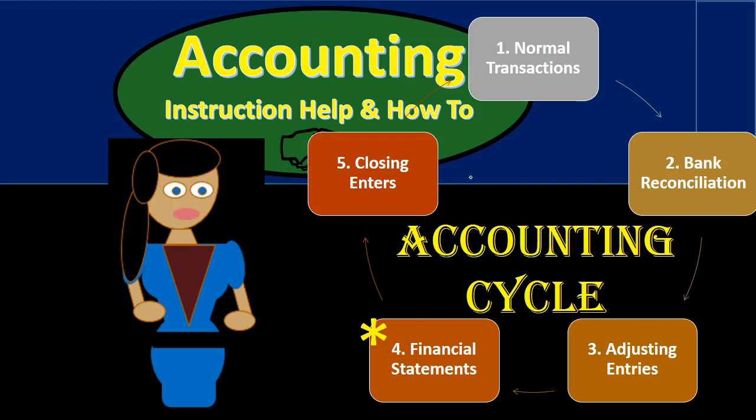The first step we're going to consider is the normal transactions. Those are the things that the accounting department is doing: entering the invoices, entering the bills, dealing with payroll — all the stuff that we generally think of in terms of the accounting department. We're going to group that into step one. In terms of timing, step one is far greater than any of the other steps because that's what's happening throughout the entire month.